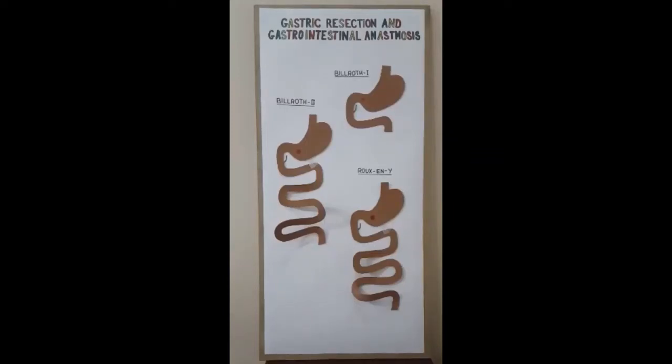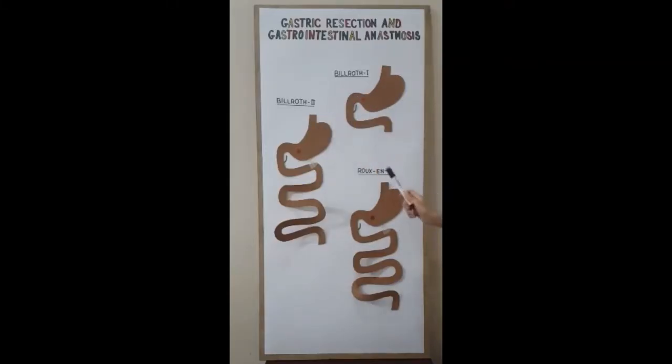Bismillahirrahmanirrahim. In this video, we will discuss the gastropreception and the gastrointestinal anastomosis — the Billroth 1, the Billroth 2, and the Roux-en-Y gastrojejunal anastomosis.